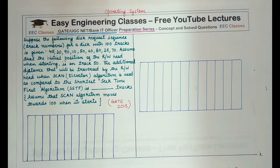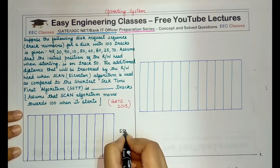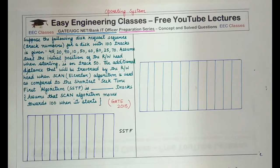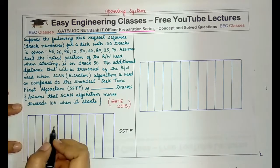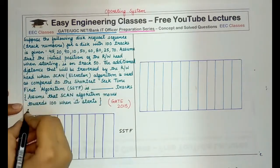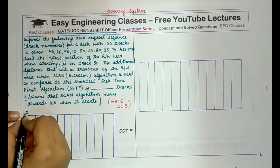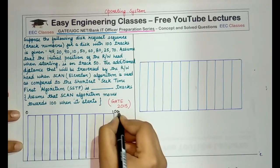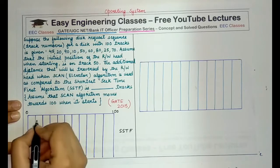So starting with the SSTF algorithm first. In shortest seek time first, what do we actually do? We traverse or we move the head to the next request that is the nearest one to the current head location, or the request to which the seek time of the head will be the least. So let us first place all the numbers or the disk requests that will be generated by the sequence or the system.